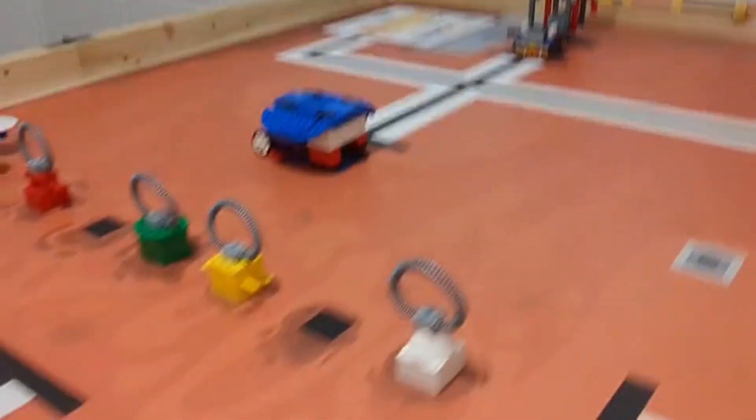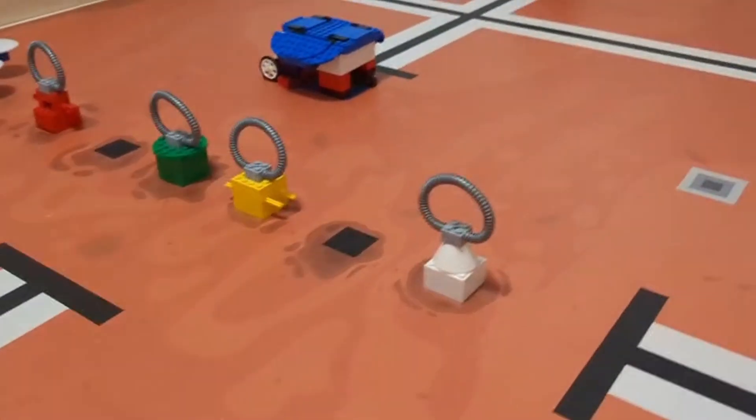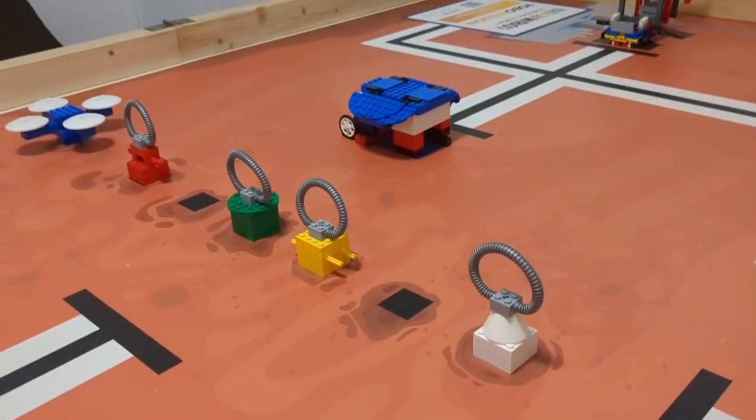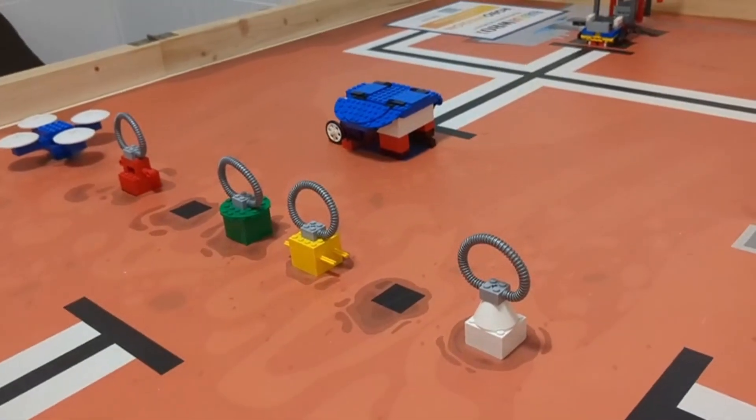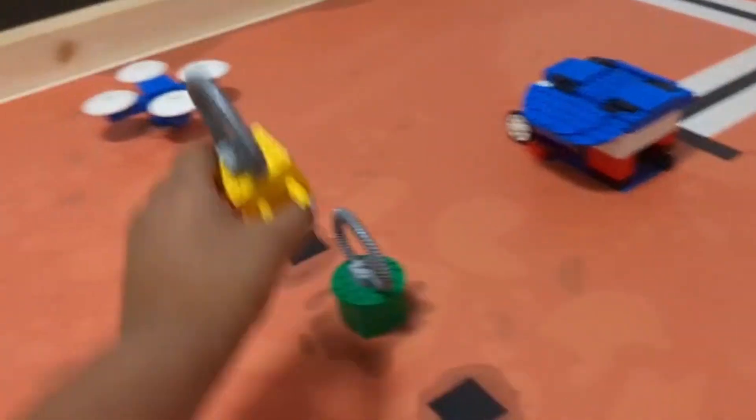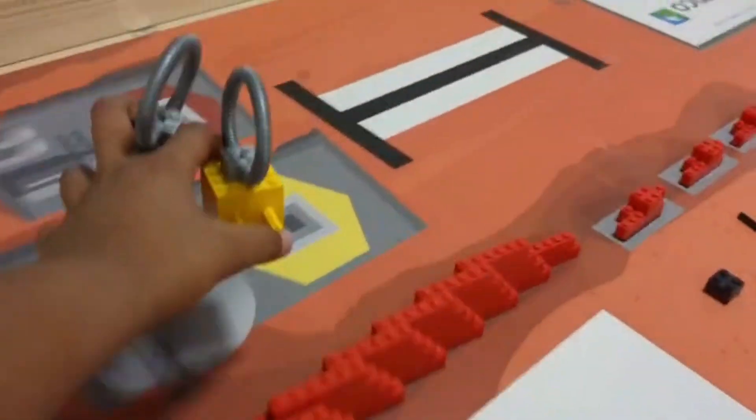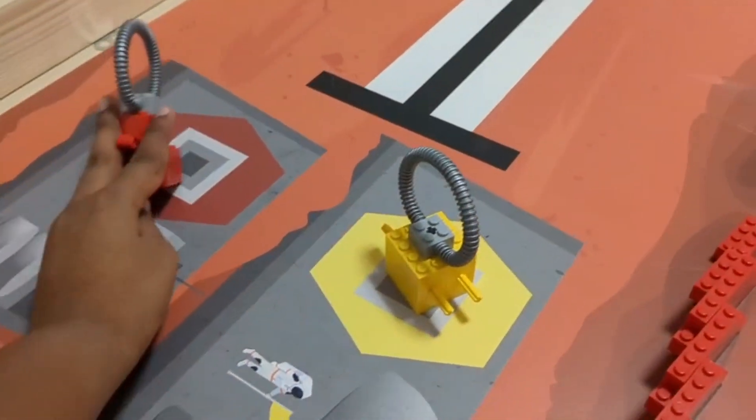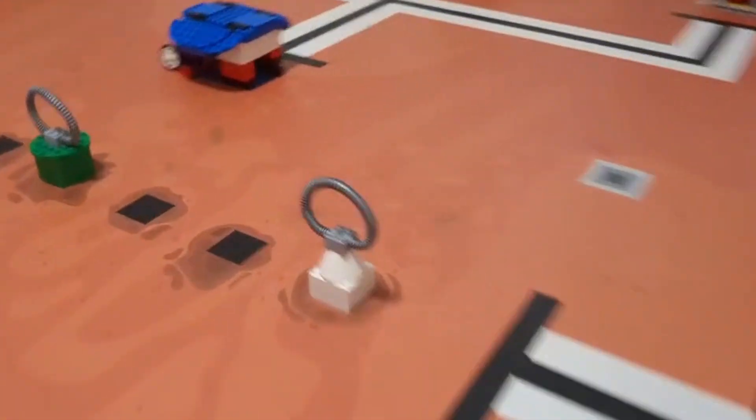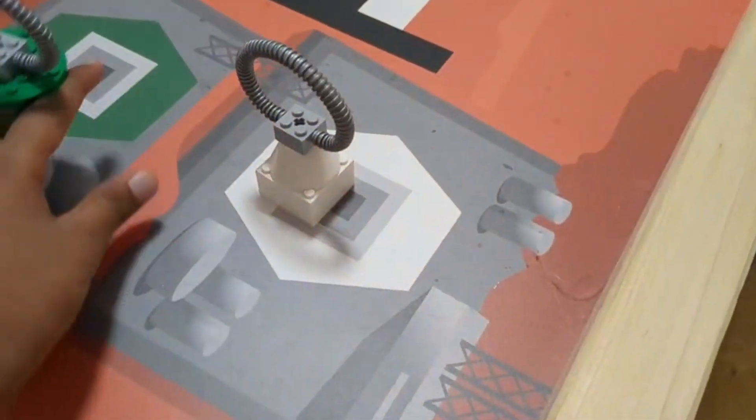The third task are these lab pieces. What you have to do is that the robot has to find out which color each lab piece is and it has to be brought into their corresponding areas. Like yellow and red have to go into yellow and red, and green and white have to go into green and white.